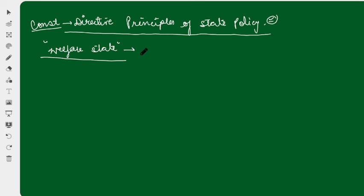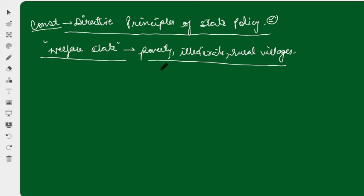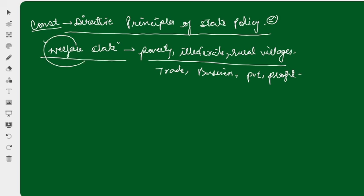When India got independence, at that time the majority of the country was under poverty — it was illiterate, with people in rural areas, in villages. India was not in a condition to only focus on trade, business promotion, private property, or profit. The major work of our leaders was to remove India from poverty, focus on education, and provide social and economic justice — collectively, to think about the welfare of the people. DPSP is basically based on this concept: that India is a welfare state.